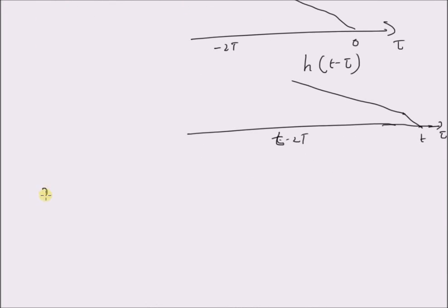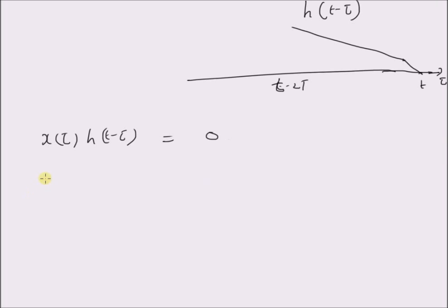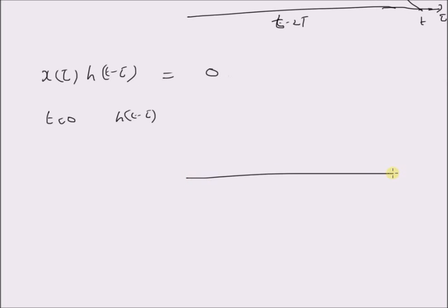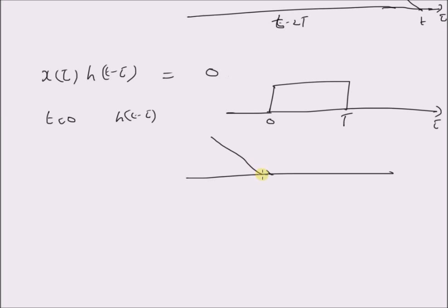For t less than 0, h(t − τ) has its support entirely to the left of 0, so the overlap with x(τ) — which is non-zero from 0 to T — is always zero. Therefore, x(τ) · h(t − τ) = 0, and y(t) = 0 for t < 0.